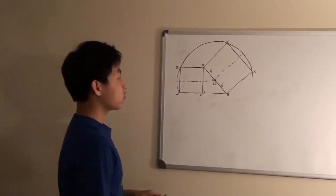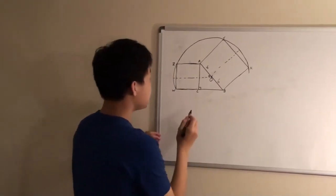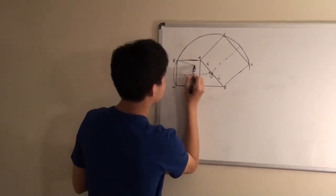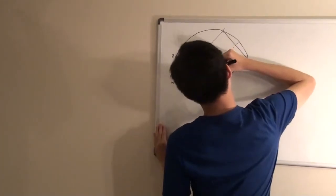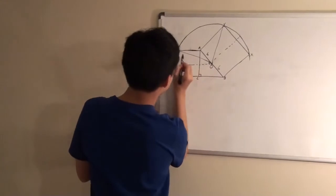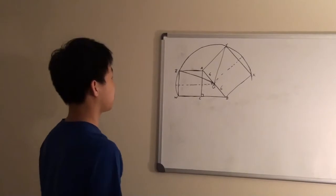Now we can draw the lines OY and OZ, and these will be our radii. So something like that.